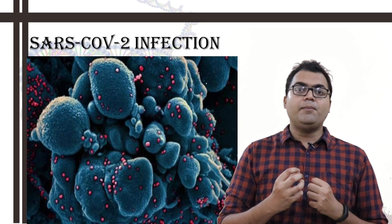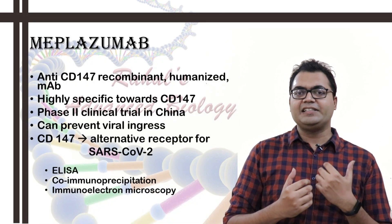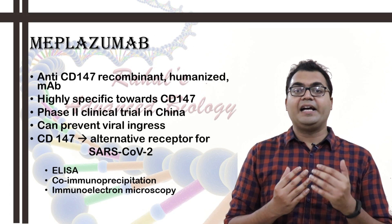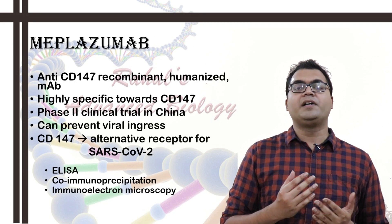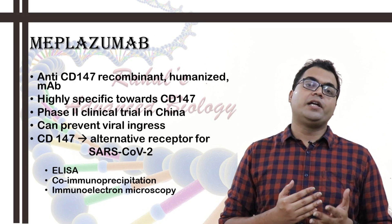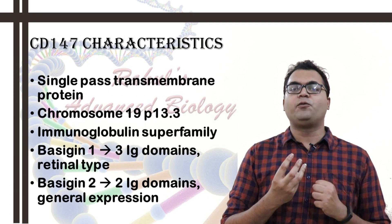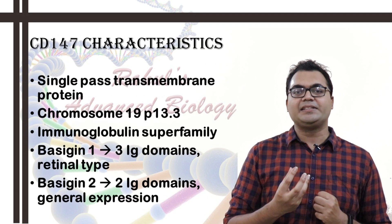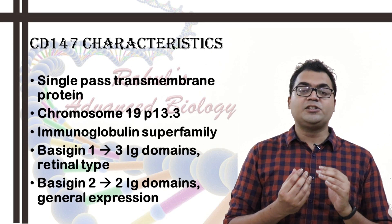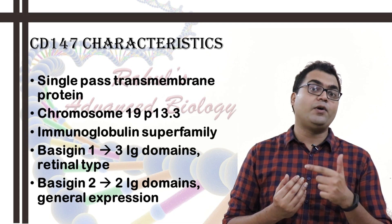Scientists have come up with various assays — including co-immunoprecipitation ELISA and immune electron microscopy — and have found that CD147 is also a viable secondary receptor for SARS-CoV-2. So SARS-CoV-2 can also attach to CD147 for gaining viral ingress.